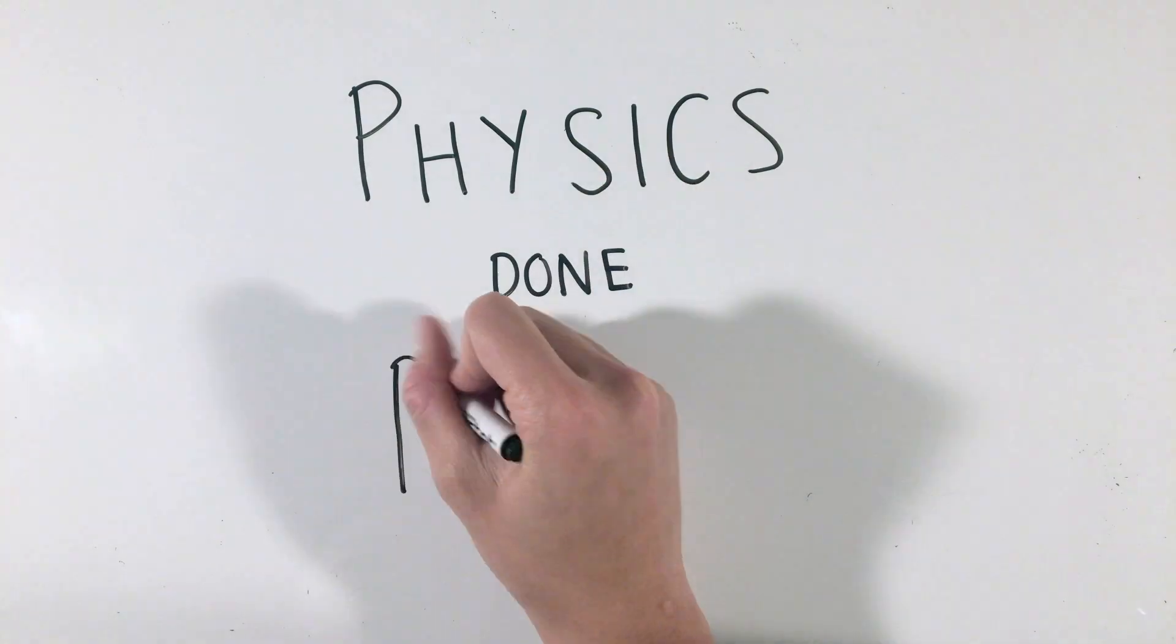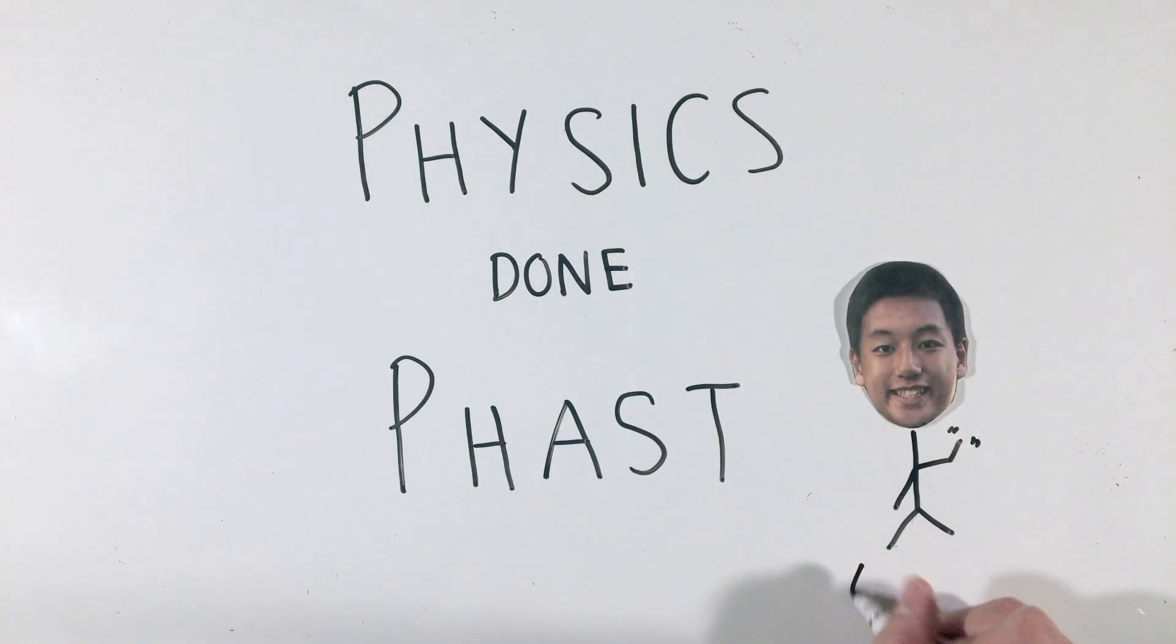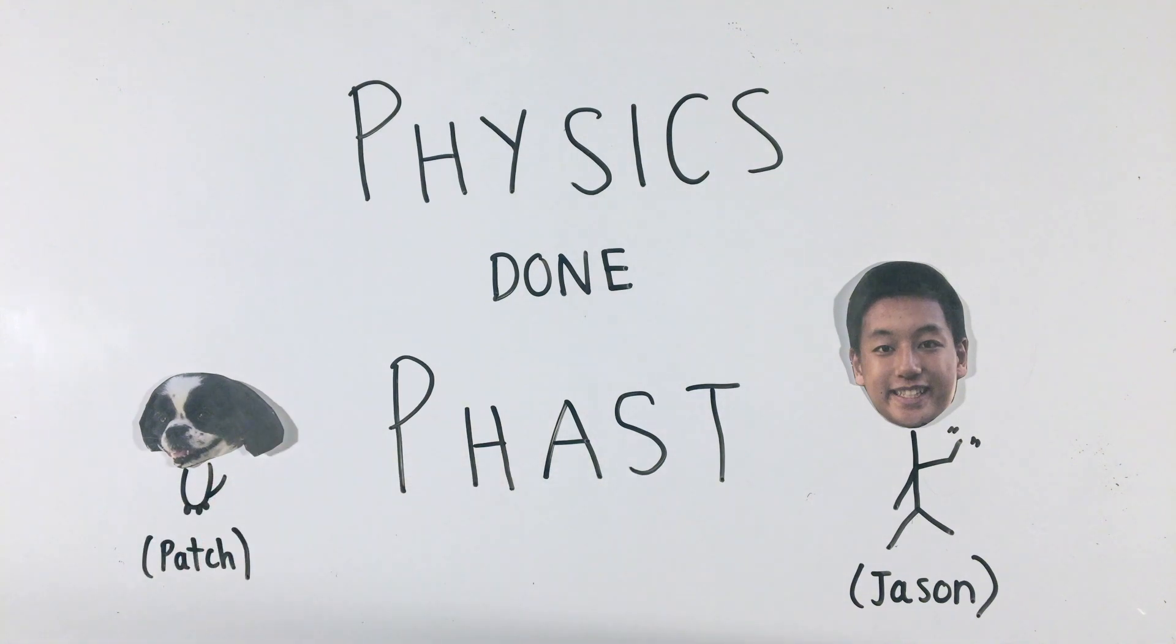While we learned about the basic equations governing gravitation in AP Physics 1, how do we analyze orbits and celestial objects in AP Physics C?